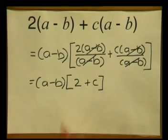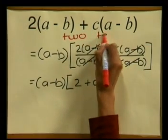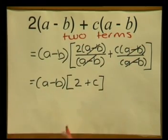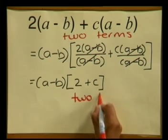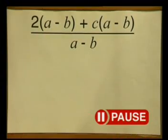Remember that when we factorize using common factors, the number of terms in our original expression must always be the same as the number of terms in our bracket. So our original expression has two terms, and if we look at our factorized form in our square bracket, we are left with two terms as well. Now let us return to fractions and do another example. Can you simplify this one? 2 multiplied by a minus b plus c multiplied by a minus b, all divided by a minus b.